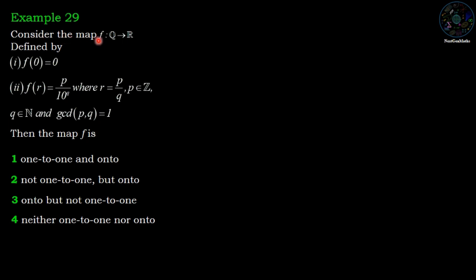Consider the map F from Q to R defined by F(0) = 0 and F(r) = p/10^q where r = p/q, p belongs to Z, q belongs to N, and gcd(p,q) = 1.